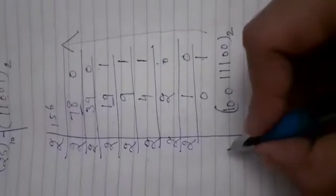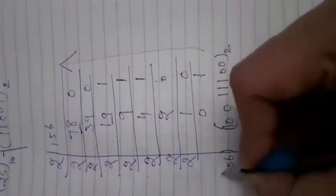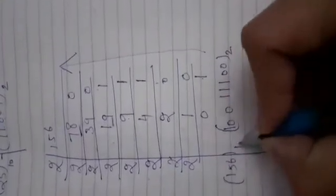So the decimal to binary conversion of 156 is 10011100 in base 2.